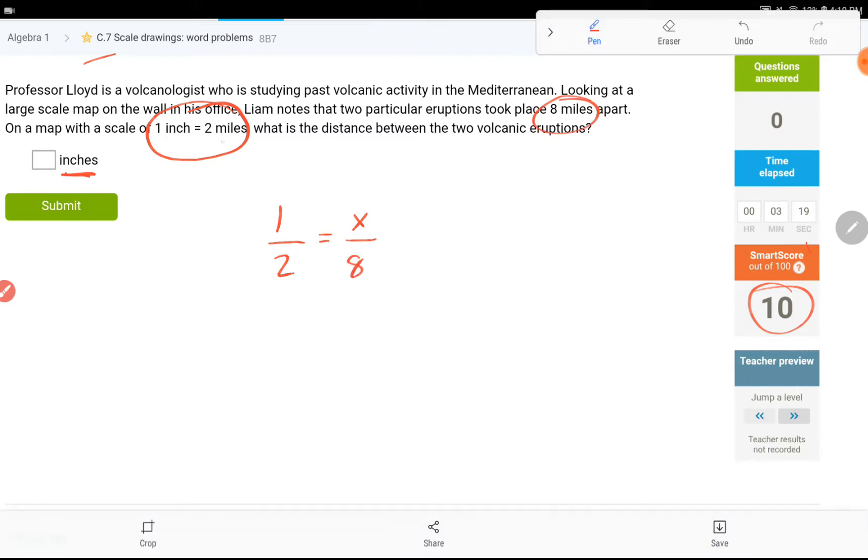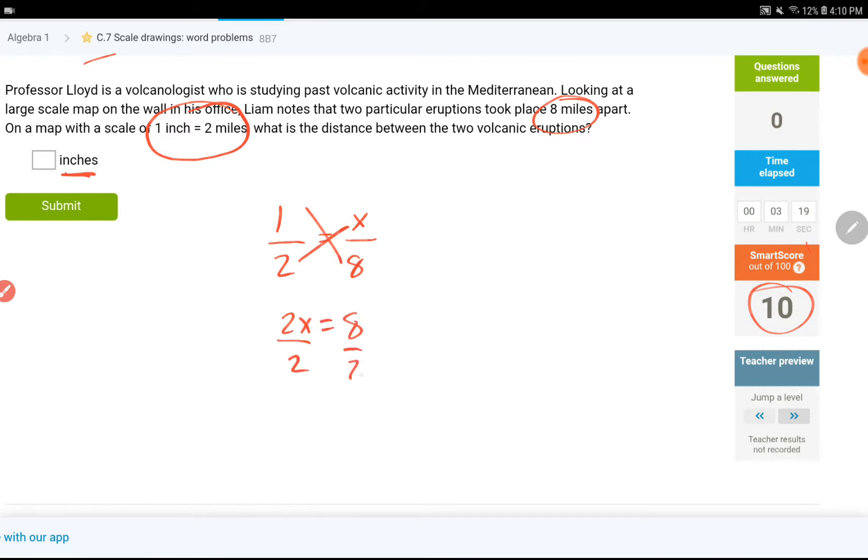So, if 1 inch equals to 2 miles, figure out how many inches is 8 miles, that is the question. So, x times 2 is 2x, it equals to 8 times 1, divide each side by 2, get the x by itself, x equals to 4.